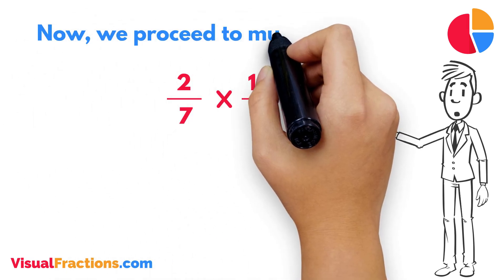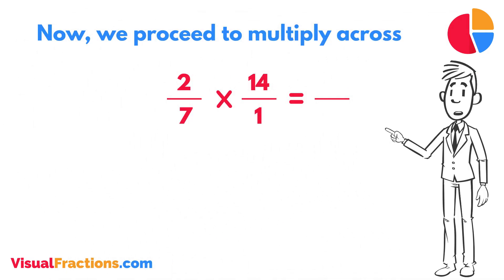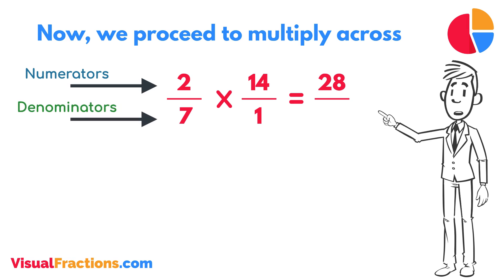Now, we proceed to multiply across. First, multiply the numerators, 2 times 14 equals 28. Next, multiply the denominators, 1 times 7 equals 7.